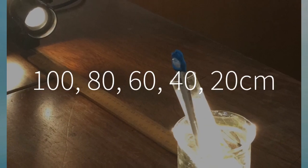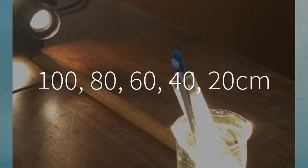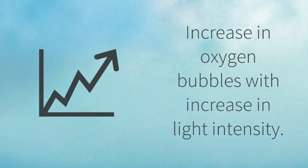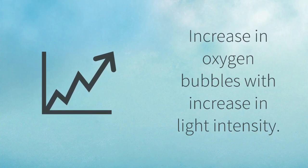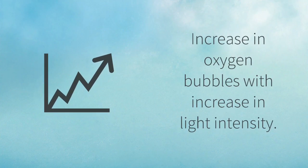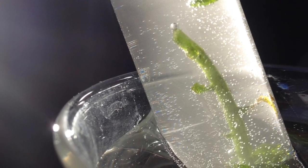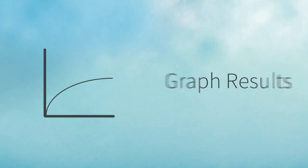To vary light intensity, we varied the distance the allodea was from the lamp. The results showed that the closer you got to the lamp, the greater the increase in the release of oxygen bubbles. With increasing light intensity, there was an increase in the rate of photosynthesis, and when the practical was completed, we graphed our results.